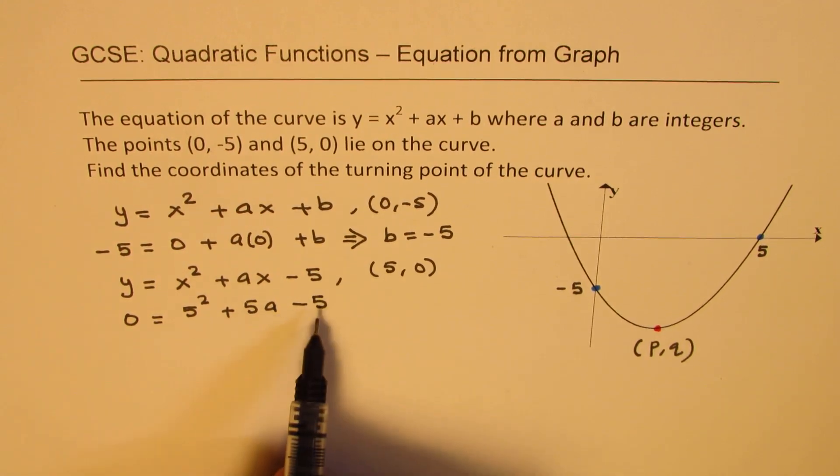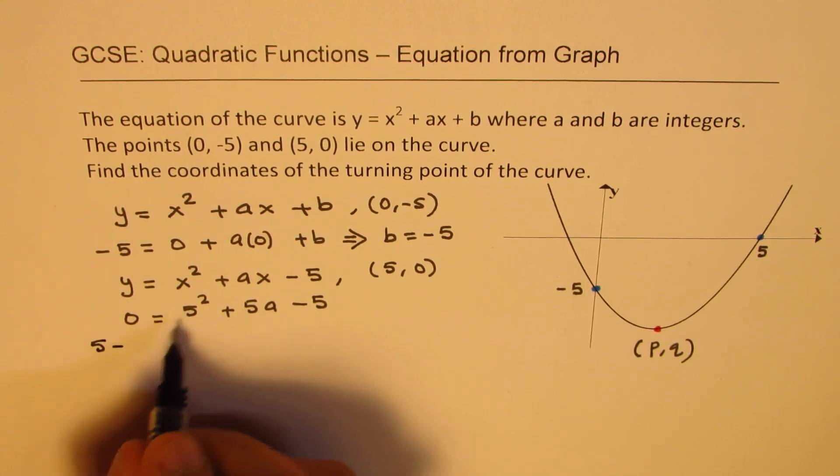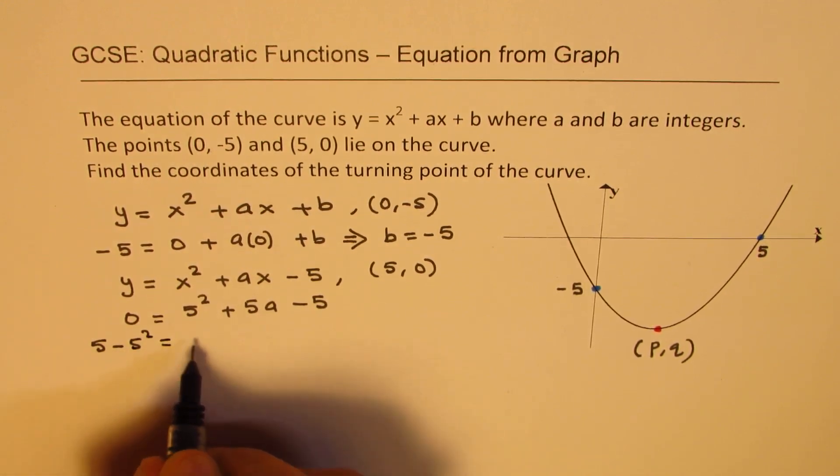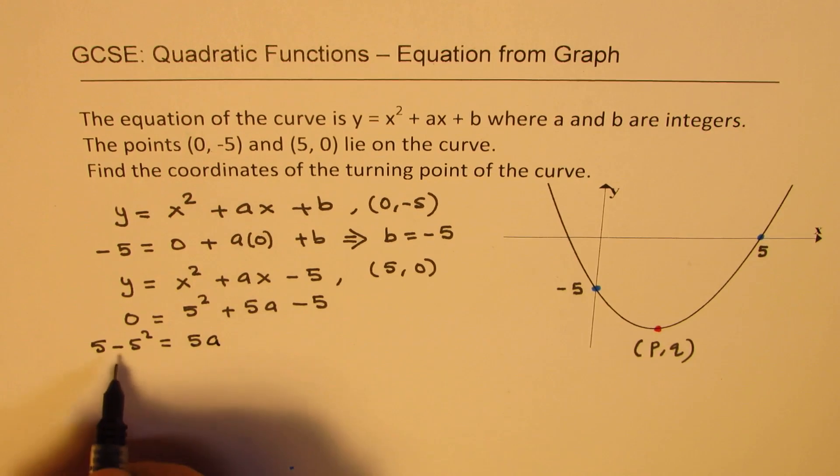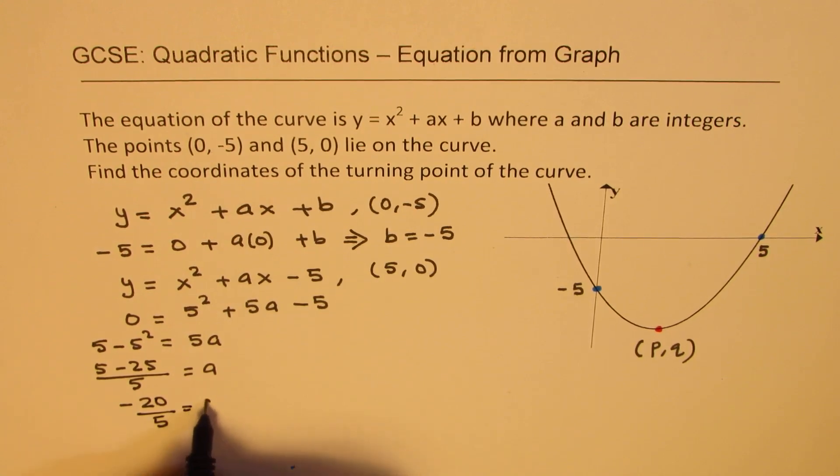Let's bring these terms to the left side, so 5 minus 5 squared equals 5a, which is 5 minus 25. We're going to divide this by 5 to get the value of a. So that is -20 over 5 equals a, which means a is -4.